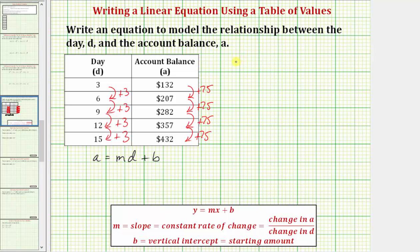Well, the slope M is equal to the constant rate of change, or in this case, it'd be equal to the change of A, or the account balance, divided by the change in D, the number of days.